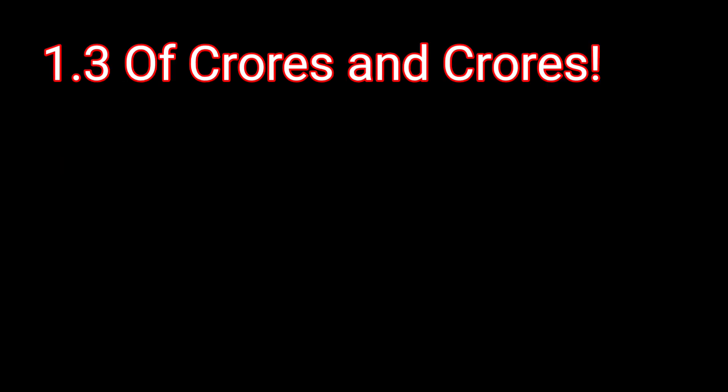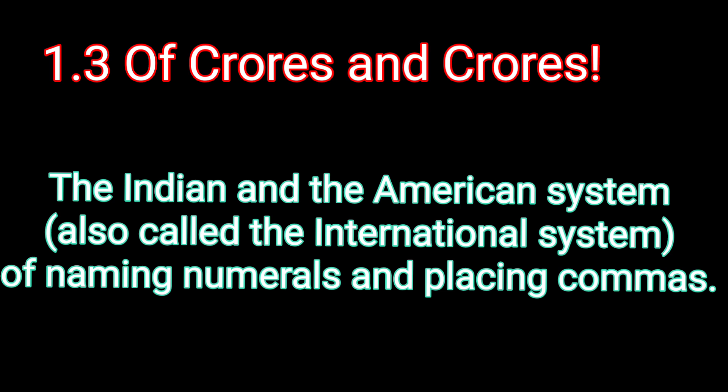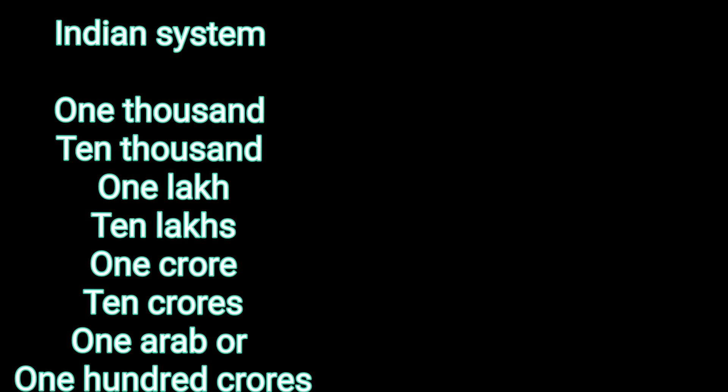In section 1.3, of crores and crores, you would compare the Indian and the American — that is the international — number system, focusing on naming large numbers and comma placement. The Indian system uses terms like 1,000, 10,000, 1 lakh, 10 lakhs, 1 crore, 10 crores, and 1 Arab or 100 crores, covering 4-digit to 10-digit numbers.